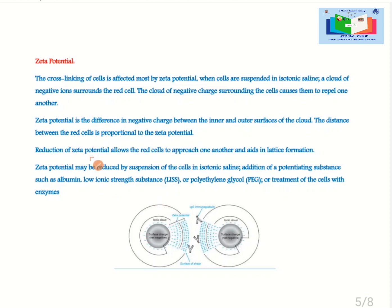Reduction of zeta potential allows the red cells to approach one another and aids in lattice formation. Zeta potential may be reduced by suspension of the cells in isotonic saline, addition of a potentiating substance such as albumin, low ionic strength solution or LIS or polyethylene glycol, or treatment of the cells with enzymes.